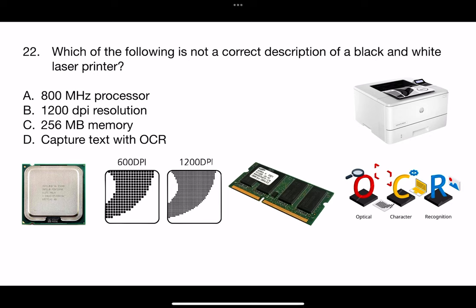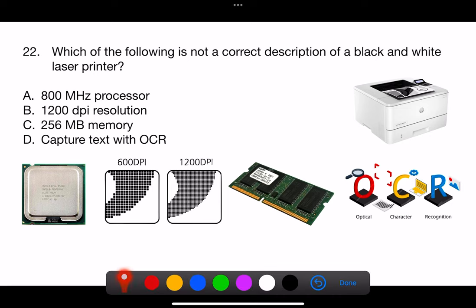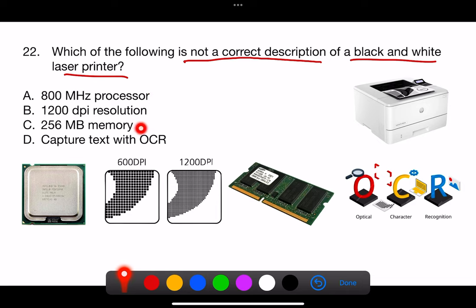Question 22. Which of the following is not a correct description of a black and white laser printer? A. 800 MHz processor. B. 1200 DPI resolution. C. 256 MB memory. D. Capture text with OCR.